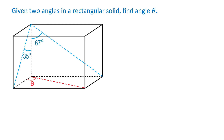In this figure we have a rectangular solid, and the solid has 6 faces — each face represents a rectangle. The left face has a diagonal and an angle of 35 degrees. The back face also has a diagonal and an angle of 67 degrees.